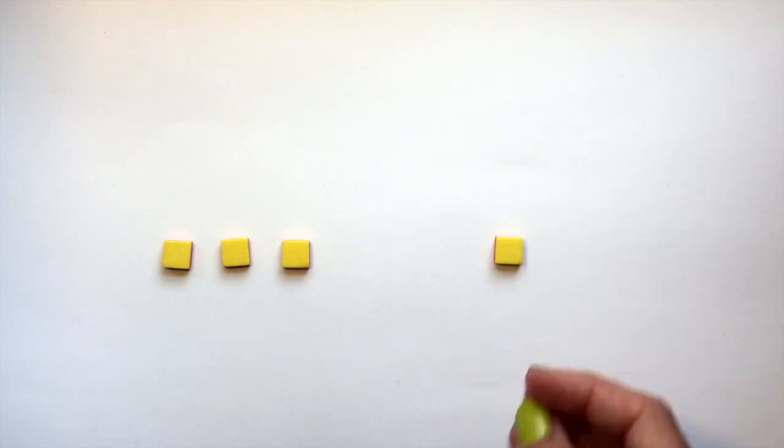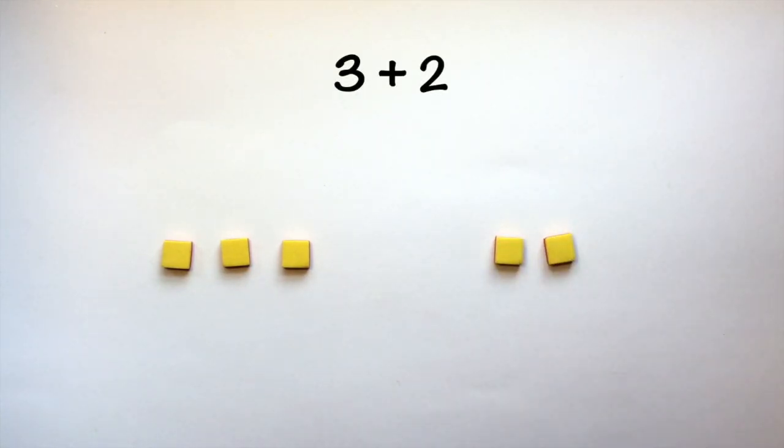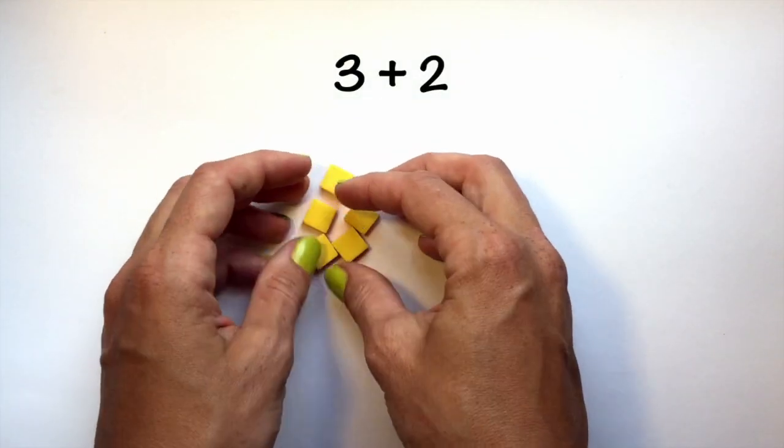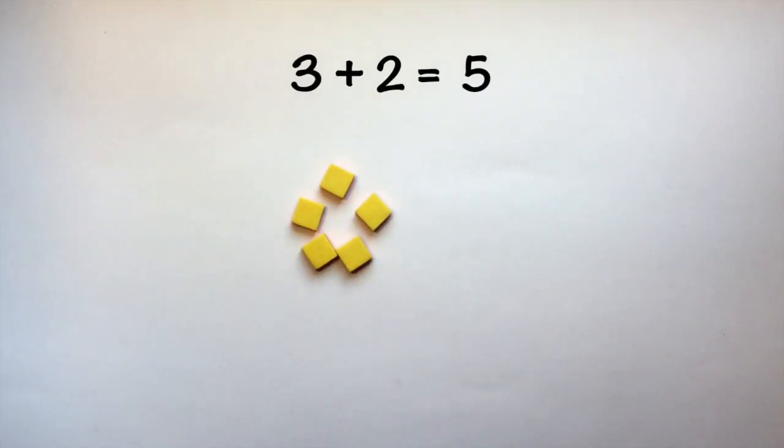Let's use our algebra tiles to add integers. As a simple example, we could add positive 3 plus positive 2 and we end up with positive 5.